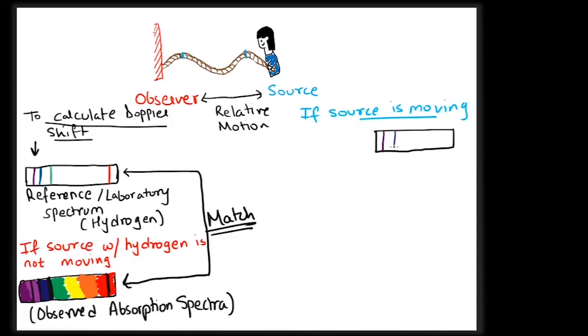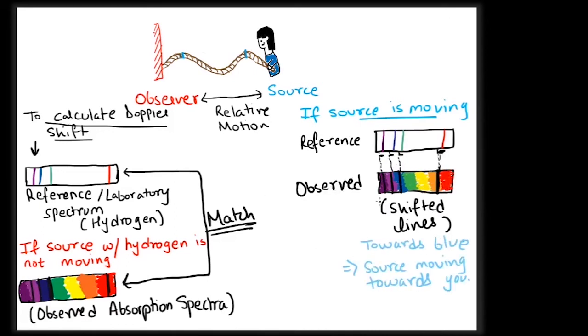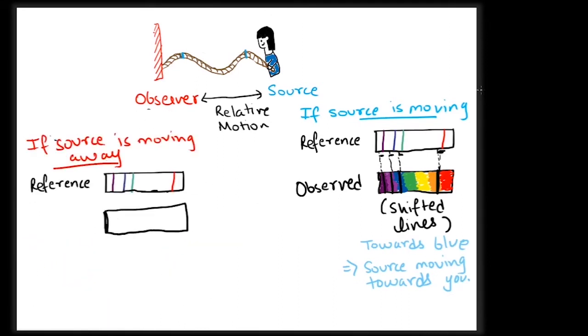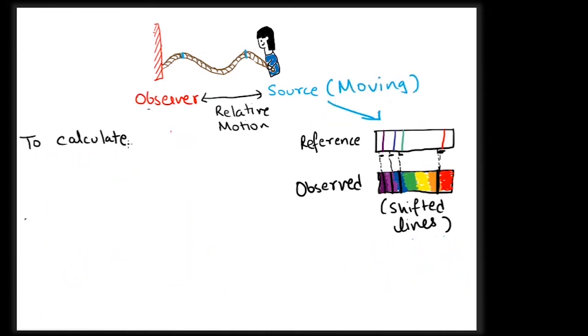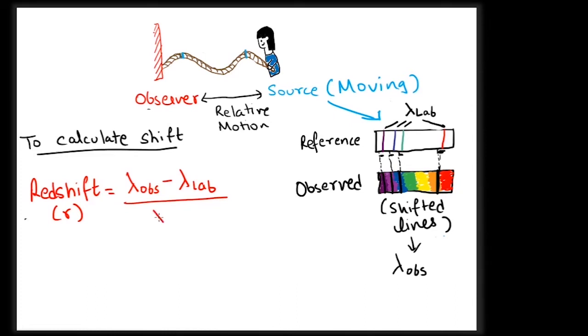Comparing the observed wavelength from the moving source with the laboratory wavelength of the same source when it is not moving, you can detect the shift in the wavelength. A faster moving source towards you will result in more blue shift than a slowly moving source. Similarly, a faster moving source away from you will produce more redshift than a slowly moving source. The amount of redshift is calculated by the ratio of the difference between the observed wavelength and the laboratory wavelength to the laboratory wavelength, or lambda observation minus lambda lab divided by lambda lab. This redshift is equal to the ratio of velocity of the source to the speed of light, i.e. c.